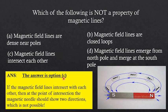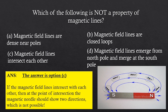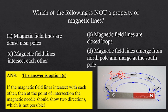The answer is option C. The reason is: if magnetic field lines were to intersect each other, then at the point of intersection a magnetic needle would have to show two directions at the same time, which is not possible. A compass needle can only point in one direction at a time. Therefore, magnetic field lines cannot intersect, and option C is not a property of magnetic field lines.